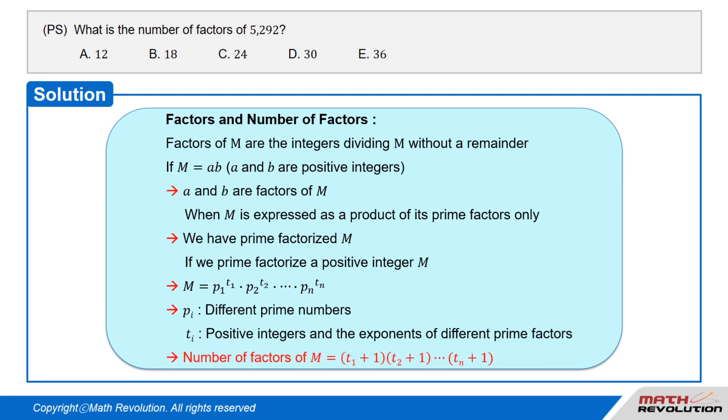Then, the number of factors of m equals t1 plus 1 times t2 plus 1 and so on until we get tn plus 1.